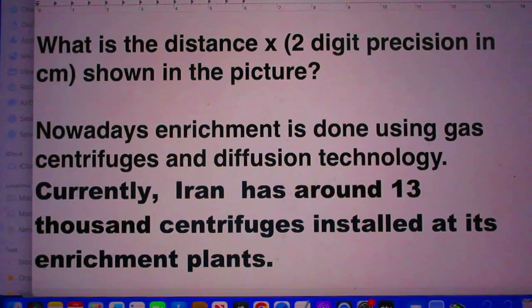Nowadays enrichment is done using gas centrifuges and diffusion technology. Currently, Iran has around 13,000 centrifuges installed at its enrichment plants, and it is feared of course that they want to build nuclear bombs.